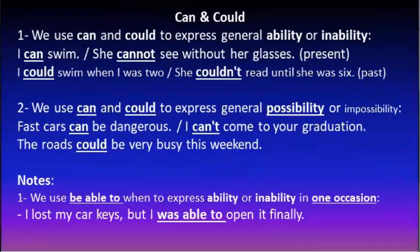After watching the video, you have to know that 'can' and 'could' express general ability, or if negative, inability. In the present tense: I can swim, or I cannot swim, or I can't. If you talk about the past, you say: I could swim when I was two, or she couldn't read until she was six. So 'can' is used in the present, but 'could' is used in the past.